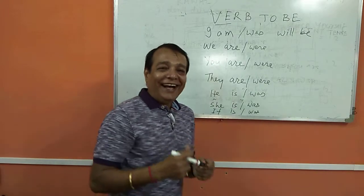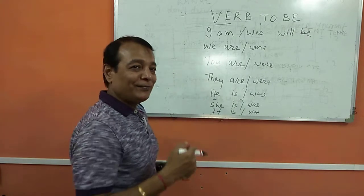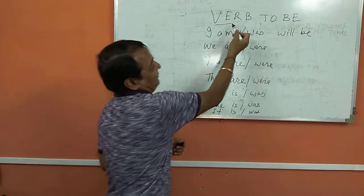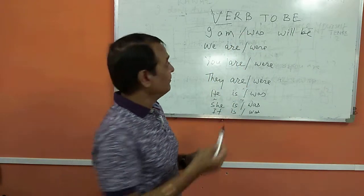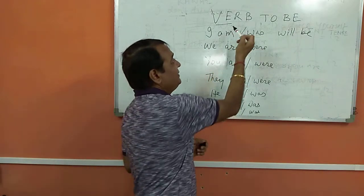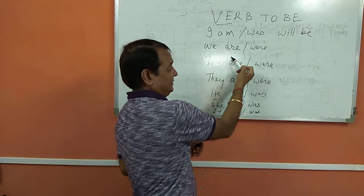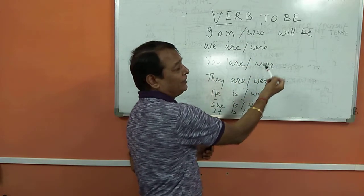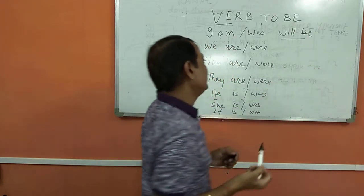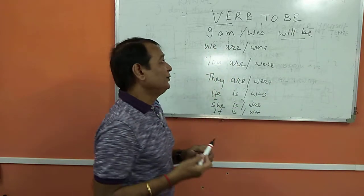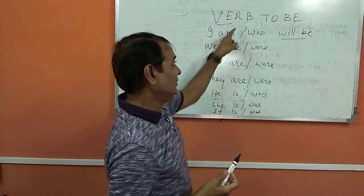Hello my friend. I am going to teach you verb to be now. What is verb to be? Is and are, was, were, and will be — will be is future tense. These five words we have to keep in mind, that's called verb to be.